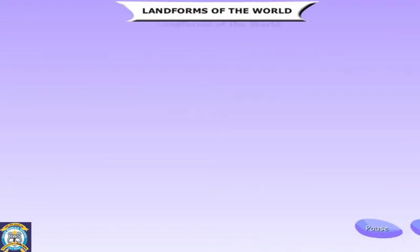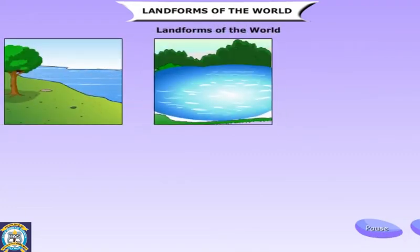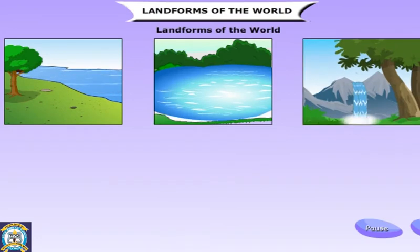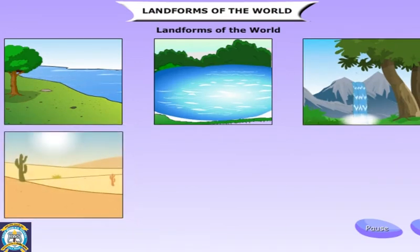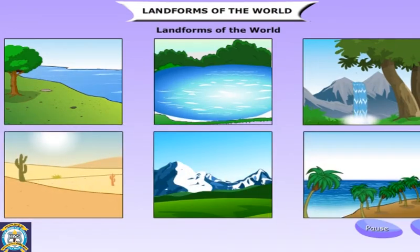Landforms of the World. Our Earth has different types of landforms, such as mountains, hills, plains, deserts, and river valleys.